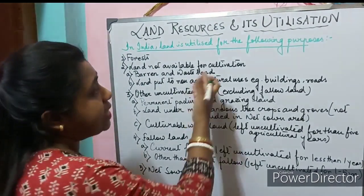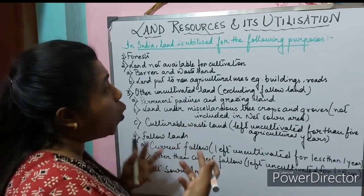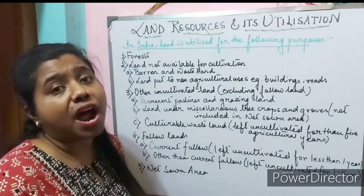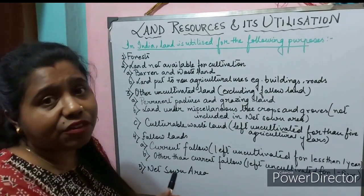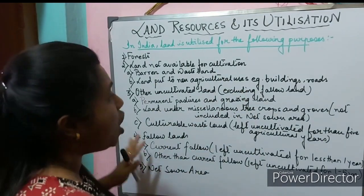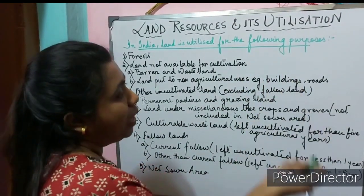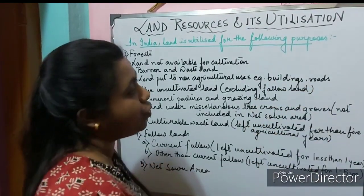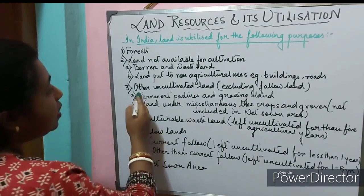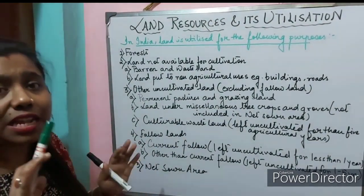Both wasteland and barren land can be converted into cultivable land with proper utilization of technology. Examples of wasteland include eroded valleys, waterlogged areas, marshy land, or forest degraded lands. Next: land put to non-agriculture use - that means land which is not used for any agriculture, like for construction of buildings, roads, or factories.